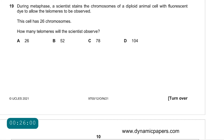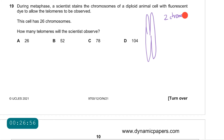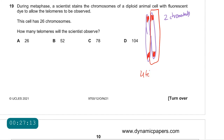Question 19: during metaphase, a scientist stains the chromosomes of a diploid animal cell to observe the telomeres. The cell has 26 chromosomes. Chromosomes are made of two chromatids, and each chromatid has two telomeres at each end. So a single chromosome with two chromatids has four telomeres. With 26 chromosomes, 26 × 4 = 104. The answer is D.